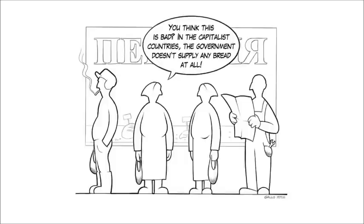Where food production is monopolised by the government, it can be hard for the people to imagine how it could ever be any other way. They fear they may starve without government to plan and direct food production. They cannot imagine how a free market in food production could possibly work, let alone how much better off they would be with that system. They are too accustomed to having food provided for them by the government.